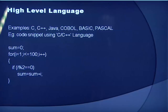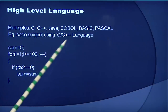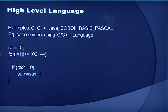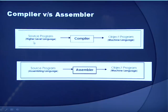Nowadays we all use high level language. High level language examples are C, C++, Java, COBOL, Basic, Pascal. You can see a code snippet from a C/C++ language where everything is very clear. This is the speciality of high level language — it is very, very close to English. Since computers understand machine level language, we require compilers and assemblers. A compiler converts a source program in high level language to an object program in machine language. An assembler converts an assembly language program to a machine language program.